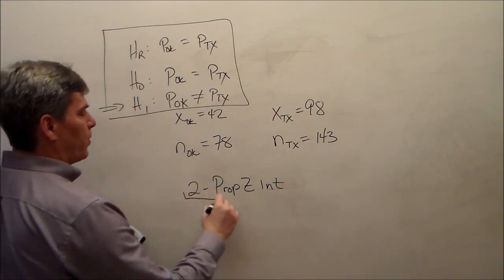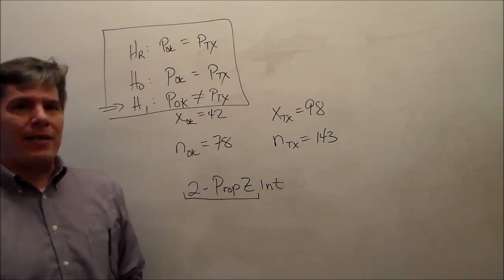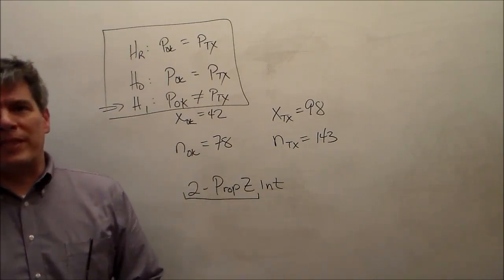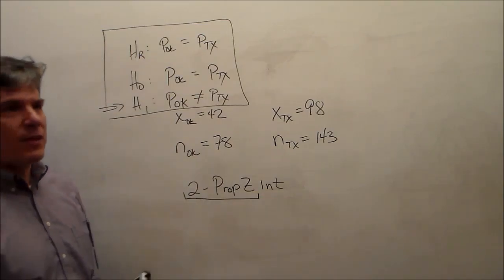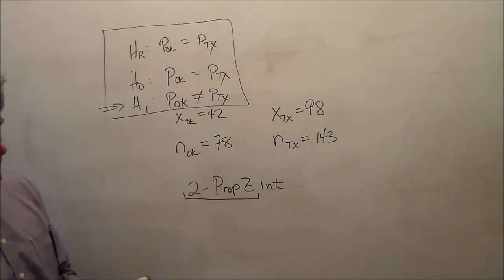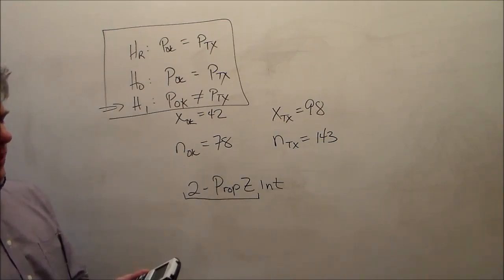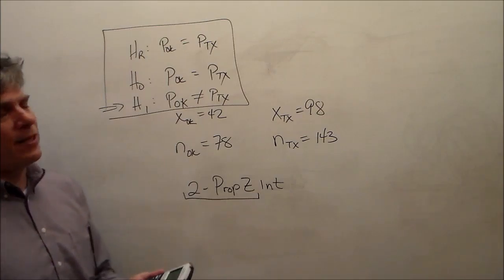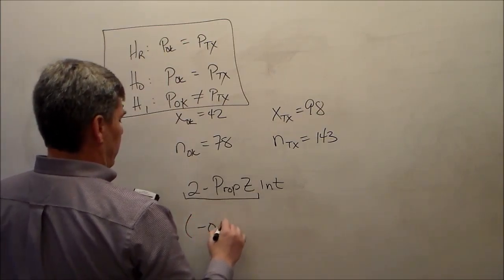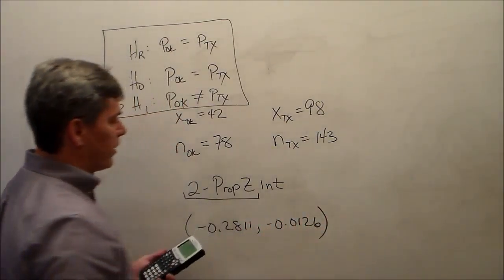So note that the 2 prop z stays the same. What follows it is determined by what you're trying to calculate. If you're eventually trying to calculate a p value, it'll be 2 prop z test. If you want a confidence interval, it's going to be 2 prop z int. It's located about the same place. Ninety-five percent confidence interval because alpha equals 0.05.